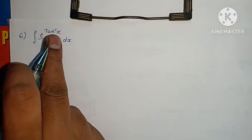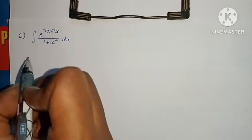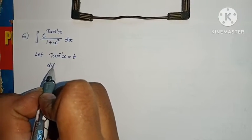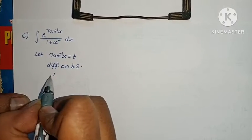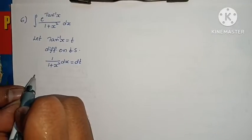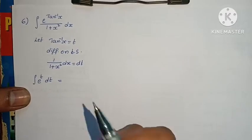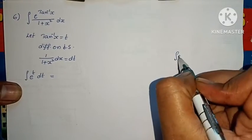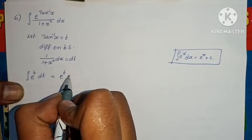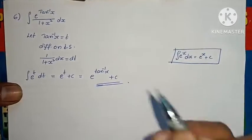Sixth question: integral of e^(tan⁻¹x) / (1 + x²) dx. Since d/dx of tan⁻¹x = 1/(1 + x²), let tan⁻¹x = t. Differentiating on both sides: 1/(1 + x²) · dx = dt. Substituting: integral of e^(tan⁻¹x) · 1/(1 + x²) dx becomes integral of e^t dt. Using formula integral of e^x dx = e^x + c, the answer is e^t + c. Substituting back t = tan⁻¹x: answer is e^(tan⁻¹x) + c. Problem complete.